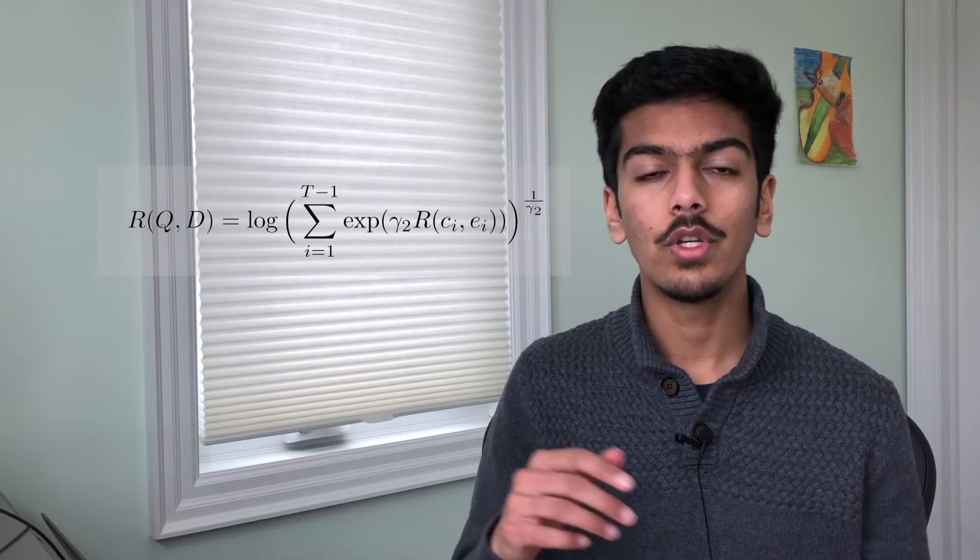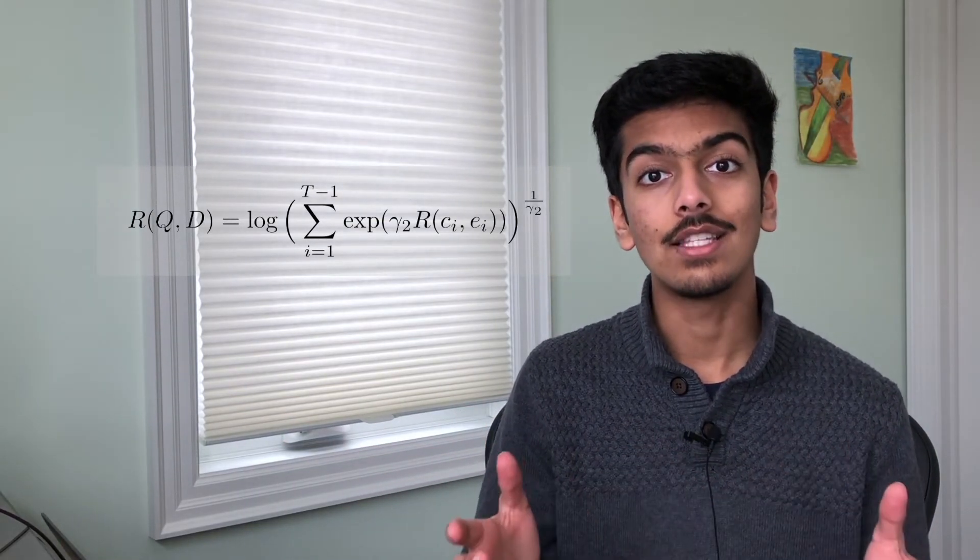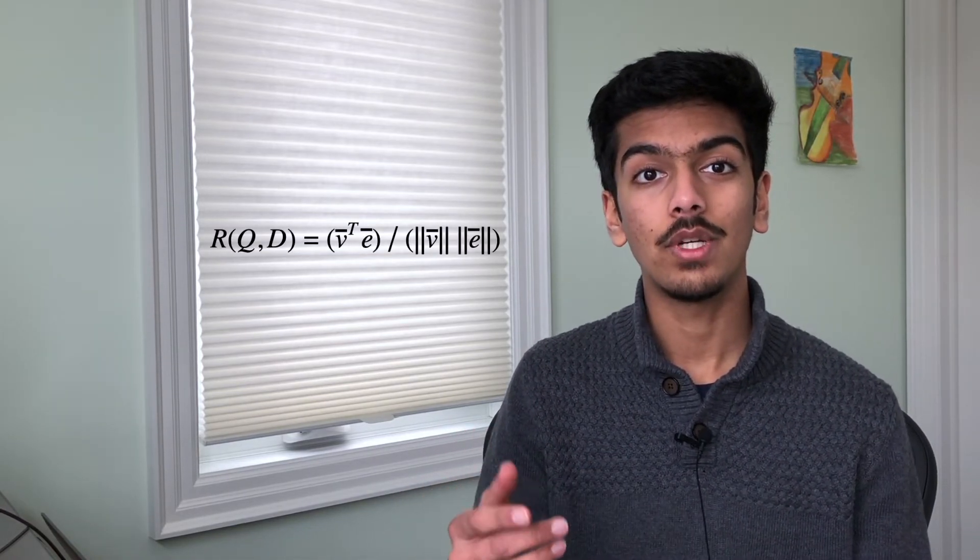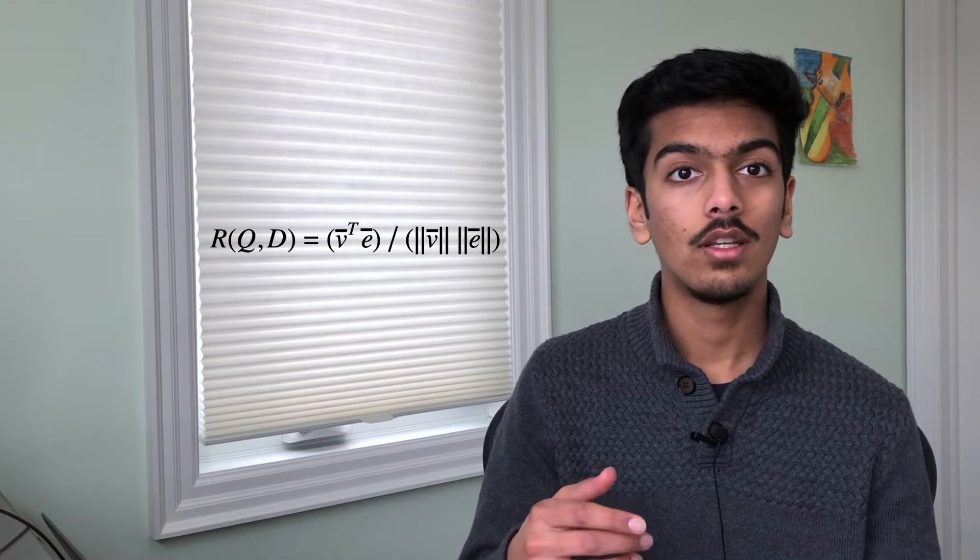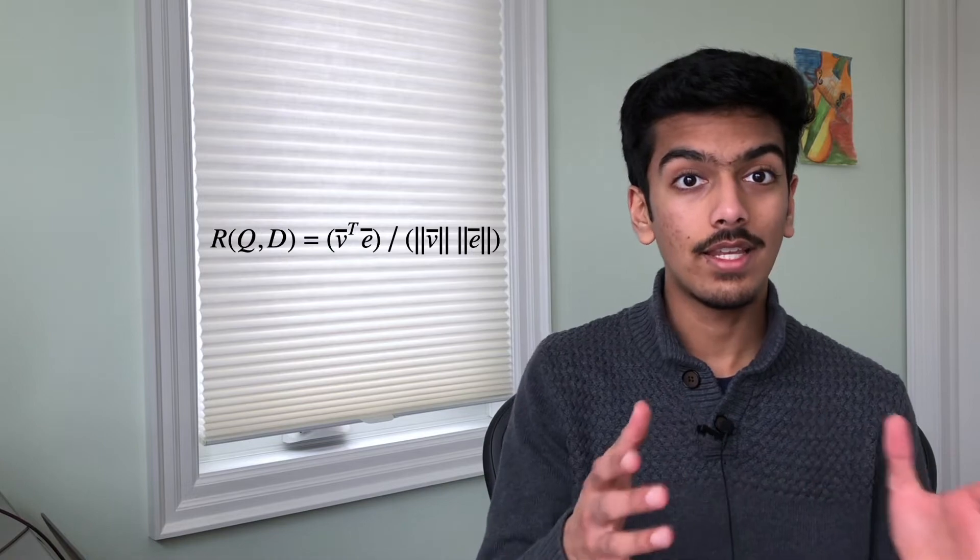Then to get our final score for how well image Q matches up with description D on the word level, we use this formula, which just takes all of our cosine similarities and adds them up. The authors also again incorporated sentence level features into the DAMSM loss. So in order to do that, they took the cosine similarity between V bar, which is the global image level features and E bar, which are the sentence level features. Now we have a score for how well the image and description match up on the word and sentence level.